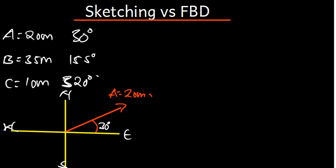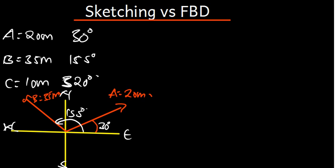Now vector B is at 155 degrees. 155 is found in the second quadrant. So I'm going to go to my second quadrant and say that this is going to be my 155 degrees. That is my vector B, which is 35 meters. We are measuring the angles from the positive X axis all the way until it touches the vector, so that angle is 155 degrees.